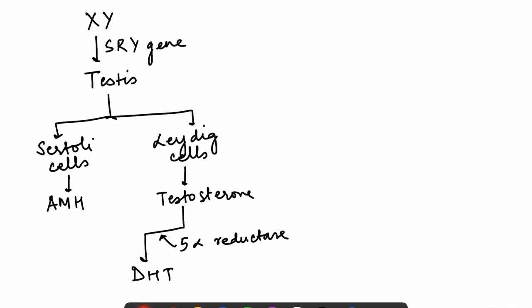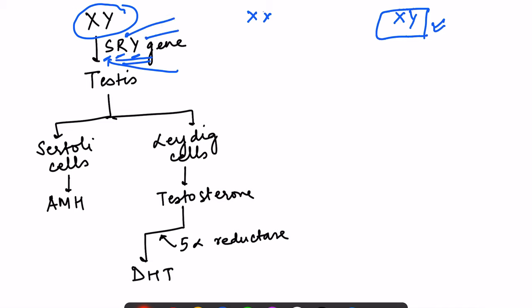Development ultimately depends on the chromosomes. Either the fetus will have XX chromosomes or XY chromosomes. If there is XY, on the Y chromosome there is a gene called the SRY gene — the sex-determining region of the Y chromosome — located on the short arm of the Y chromosome. If this gene is present, the bipotential gonad will develop into the testis, with regression of the outer cortical part, beginning from the sixth week.